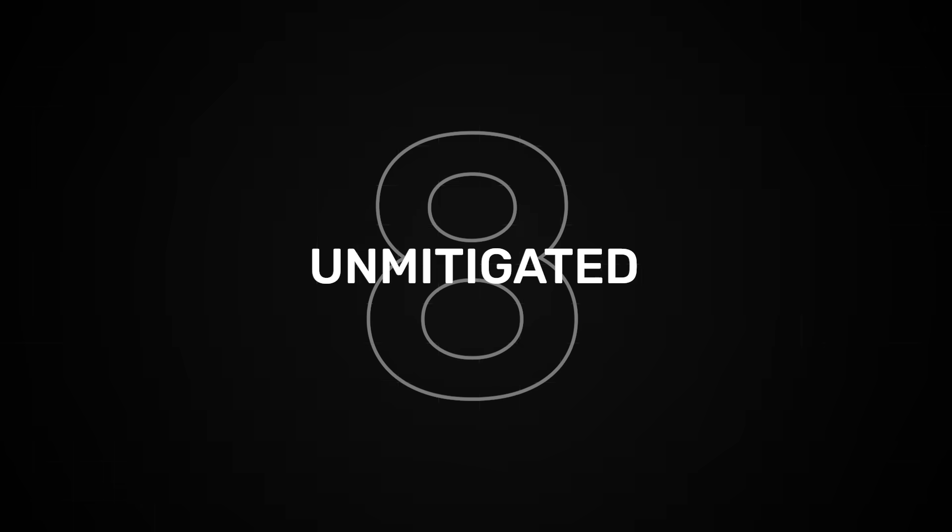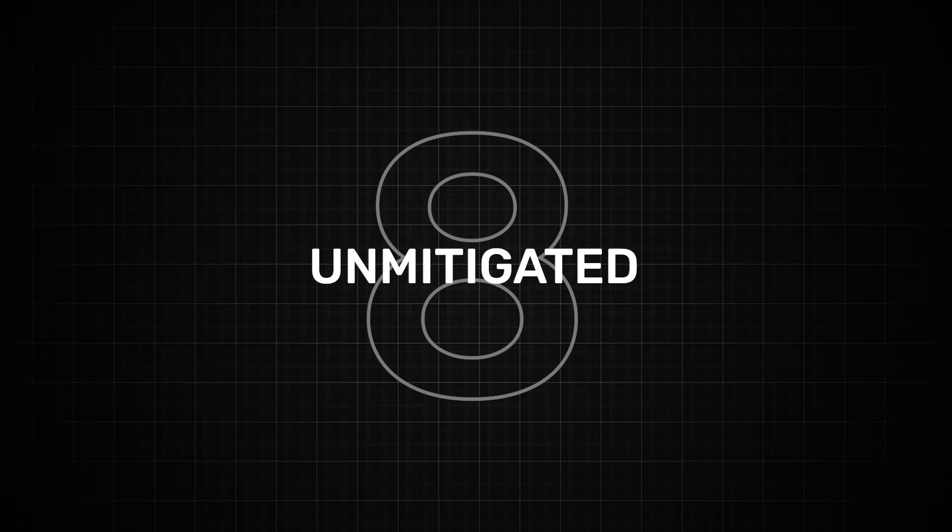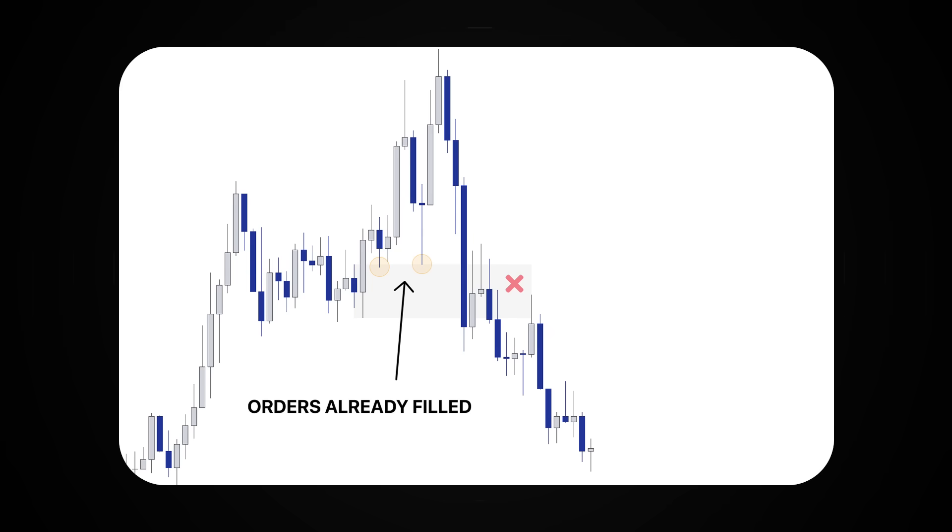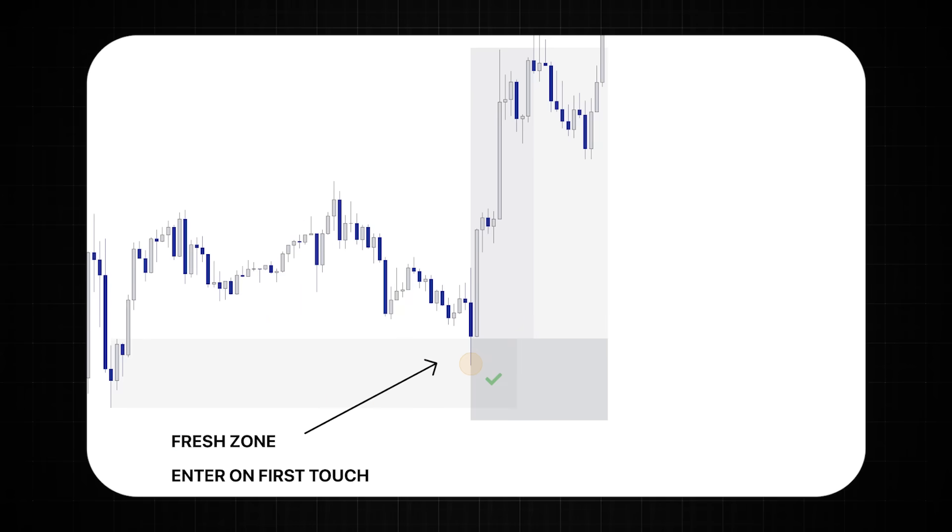And last but not least number eight is the zone unmitigated. It's just a fancy way of saying is the zone completely fresh or has it already been touched? Because if you see a zone with touches then it's very likely that a lot of the resting orders within that zone have already been filled. So I try to focus on zones that are completely fresh as these usually give the strongest move when price mitigates them. Now combining as many of those confluences together are going to give you the highest probable institutional demand zones to trade from.